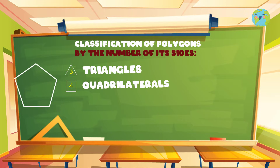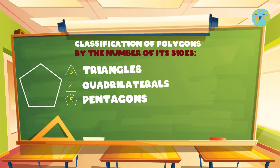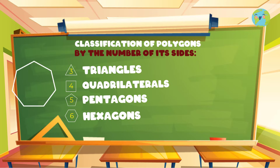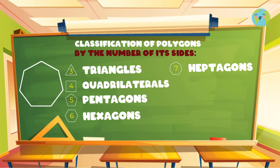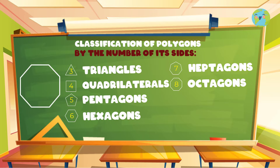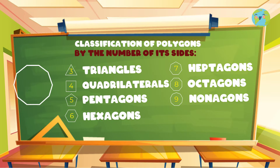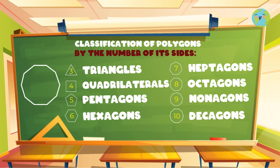The five-sided ones are called pentagons. The six-sided ones are hexagons. The ones with seven sides are heptagons. The eight-sided ones are octagons. Those of nine sides are eneagons or nonagons. And the ones that have ten sides are called decagons.